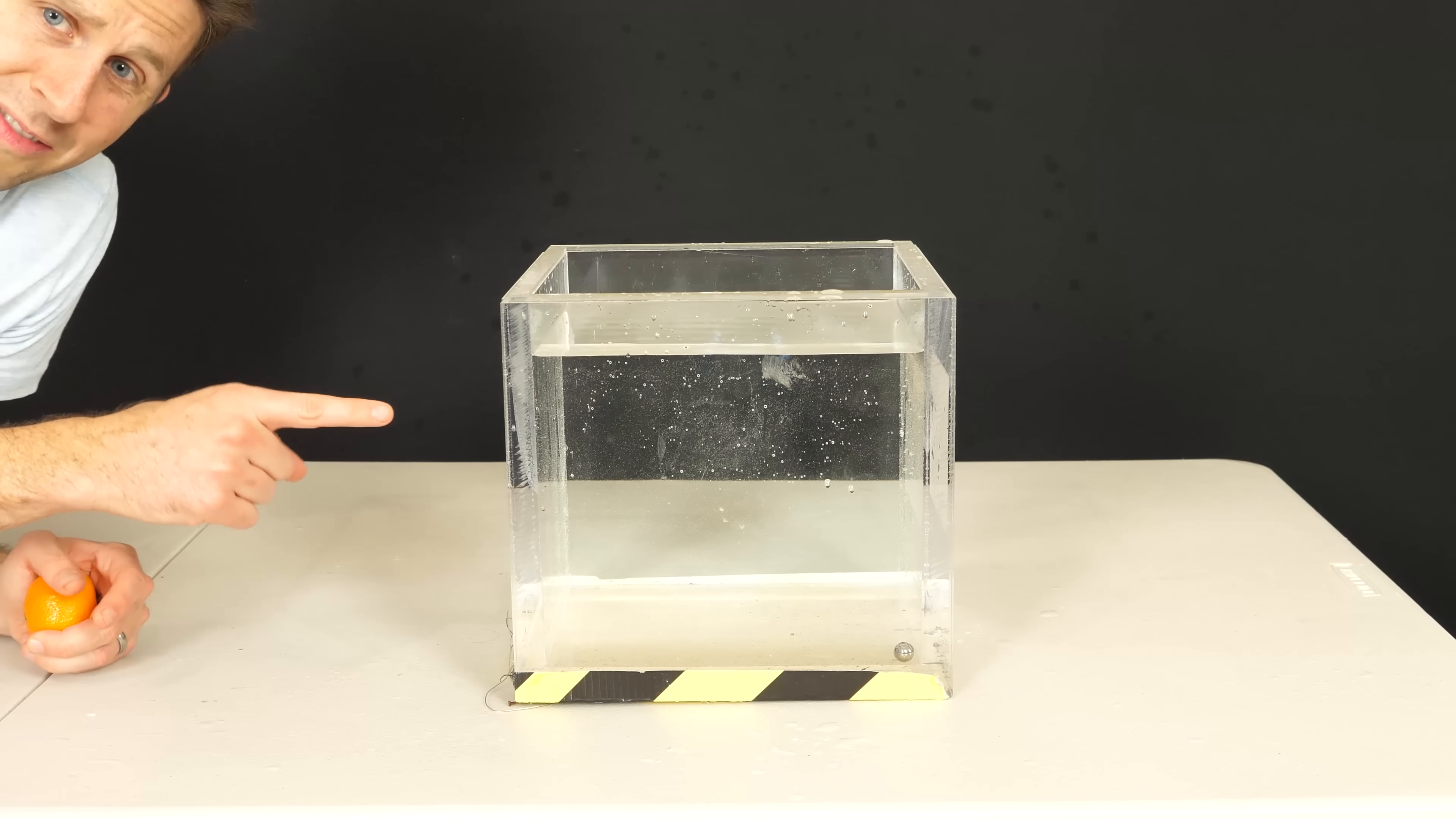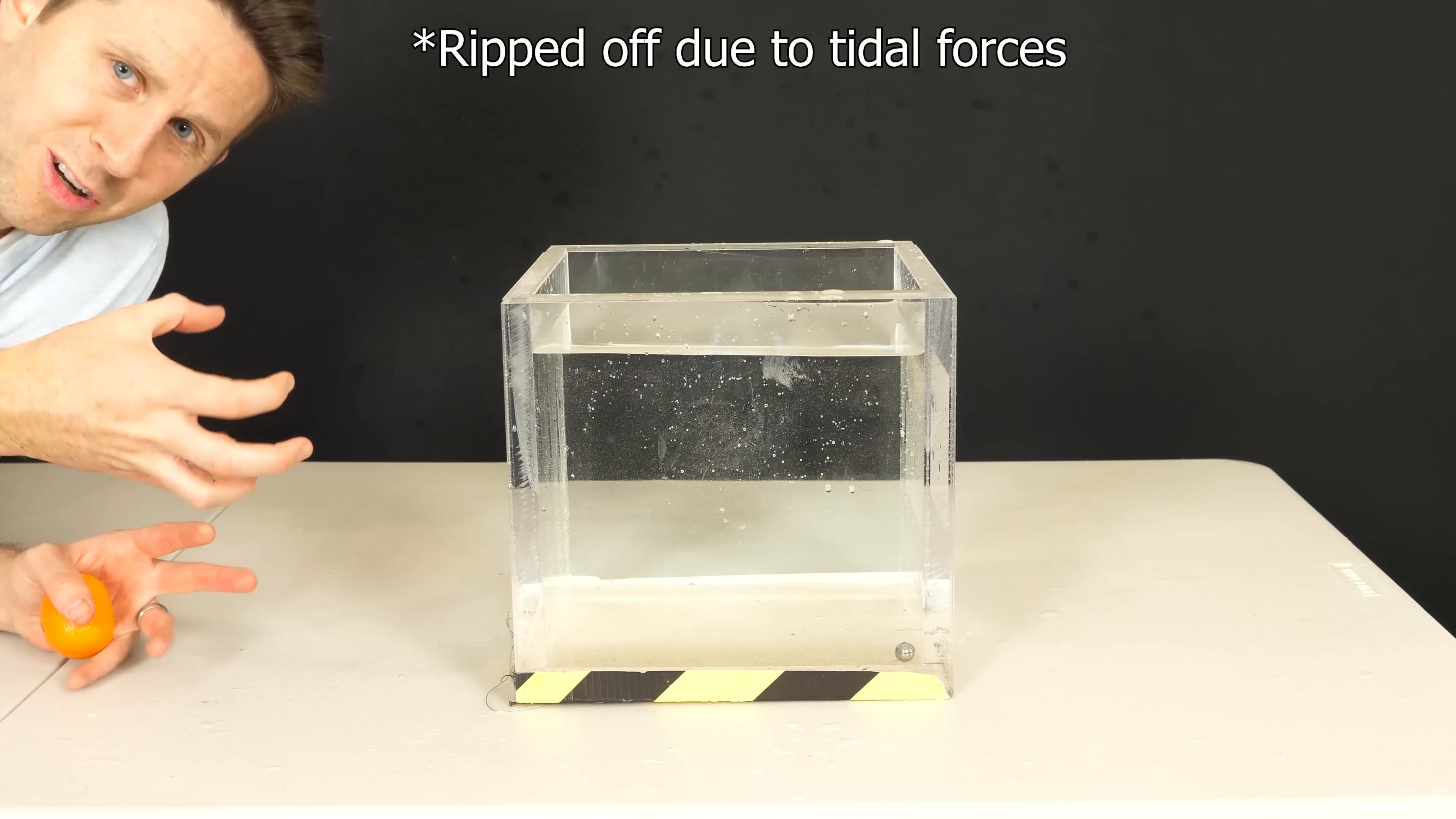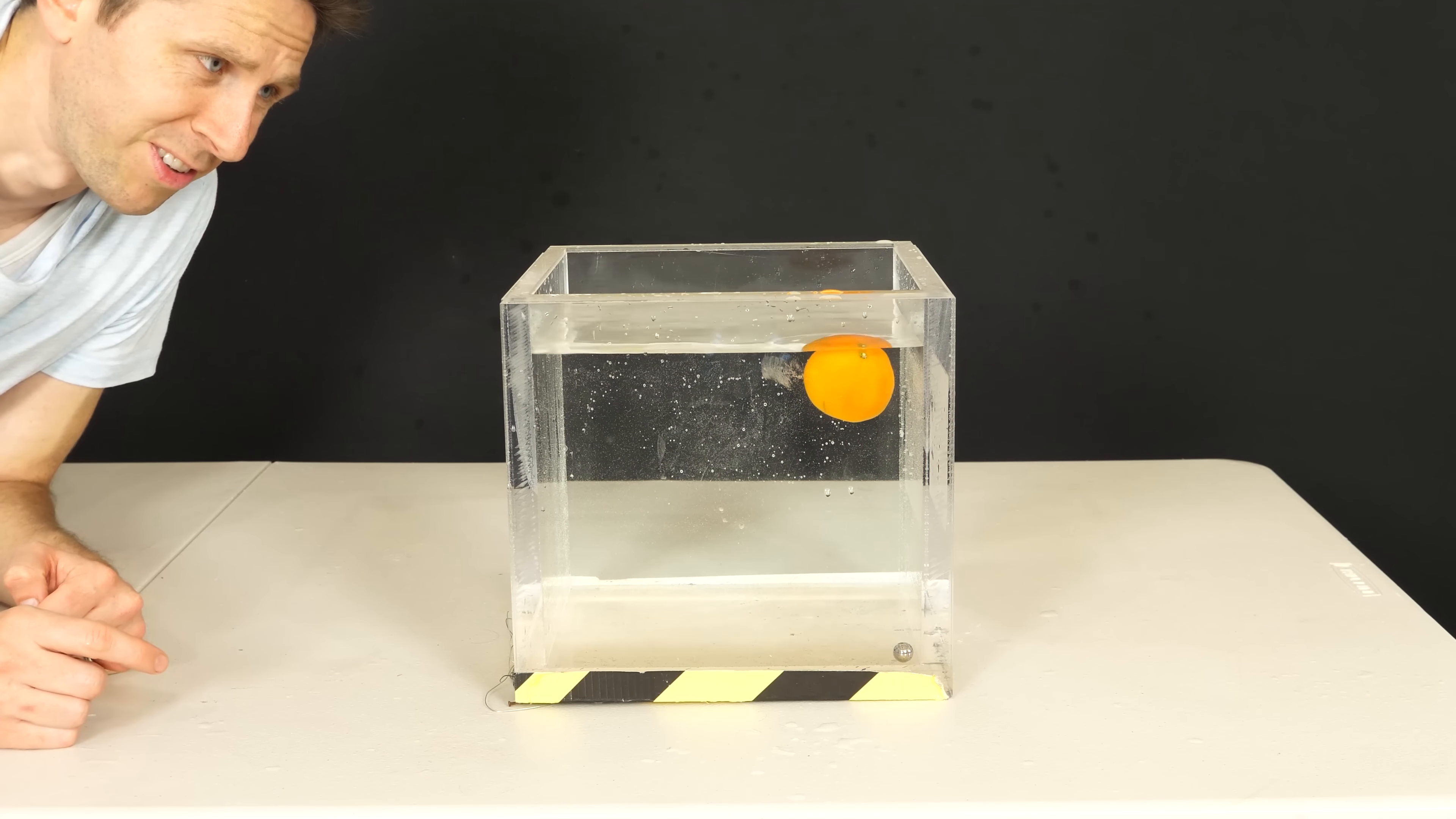Now normally, the point of no return with a drop this size of a neutron star is around eight inches. Around eight inches away, your arm would become too heavy to ever pull back and then it would just get sucked in and probably get ripped off and it would pull your whole body in and you'd compress down into the neutron star. But if you put water around it, something interesting happens. So let's see if this orange gets sucked in. Huh. It just floats.